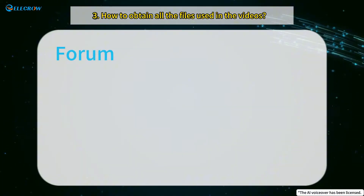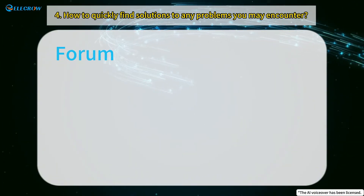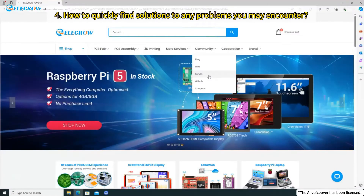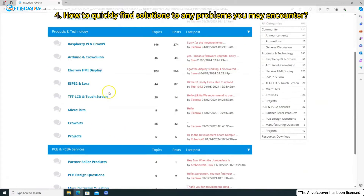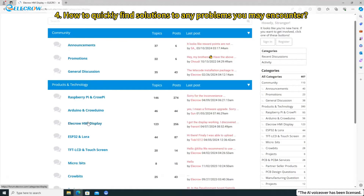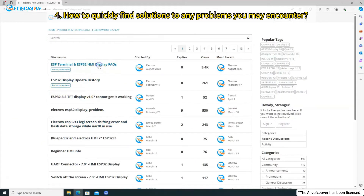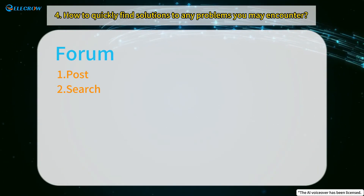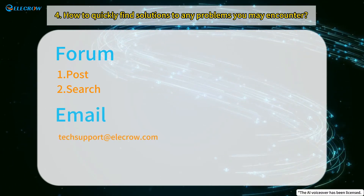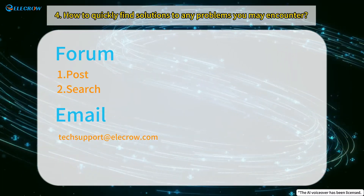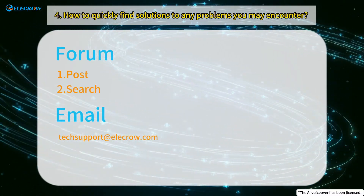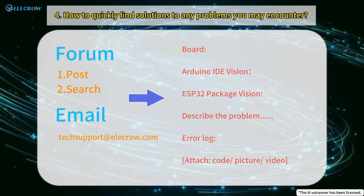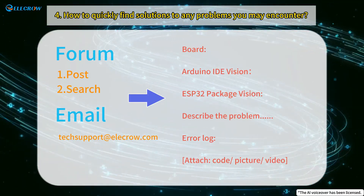Last but not least, we believe that both beginners and experienced developers will want to have a place to communicate with each other. So we have built a forum where you can seek help when you encounter difficult problems. Our technical support will respond to you as soon as possible, and we will collect common problems and solutions in the top posts. Of course, you can also search for the information you want through the search function. In addition, you can also send an email to our technical support. However, it is worth noting that when posting a message or email for assistance, please follow the format on the right side to provide additional information. This will help technical support assist you in analyzing and locating the issue and resolving it.